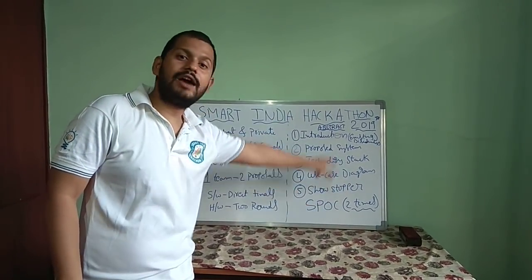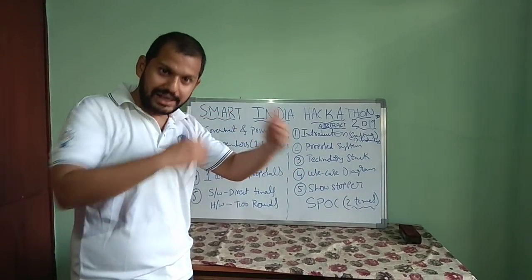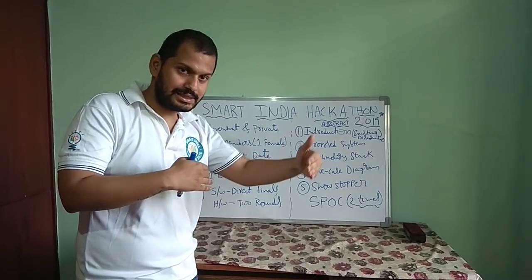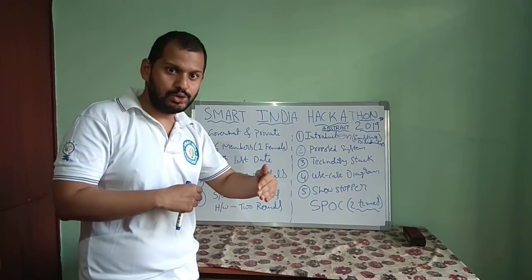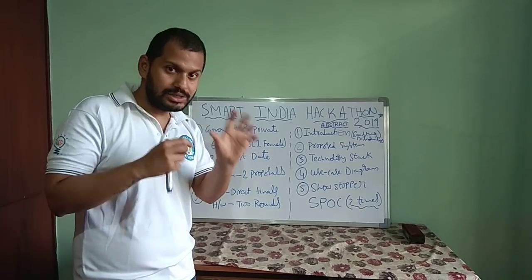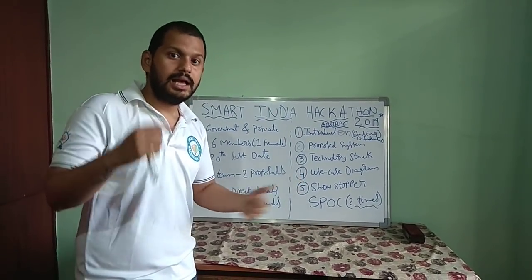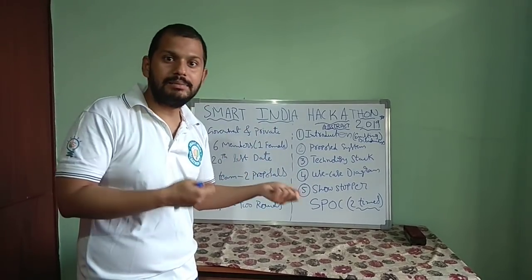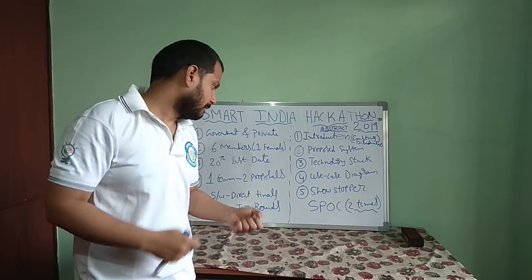This is how you write your abstract or proposal — clearly covering what the existing system is, what you have proposed, what technology stack you are using, who the users of your prototype are, and what the show stopper is. If you mention the show stopper, the government will take initiative in providing the necessary data so your proposal does not get stuck in the middle.